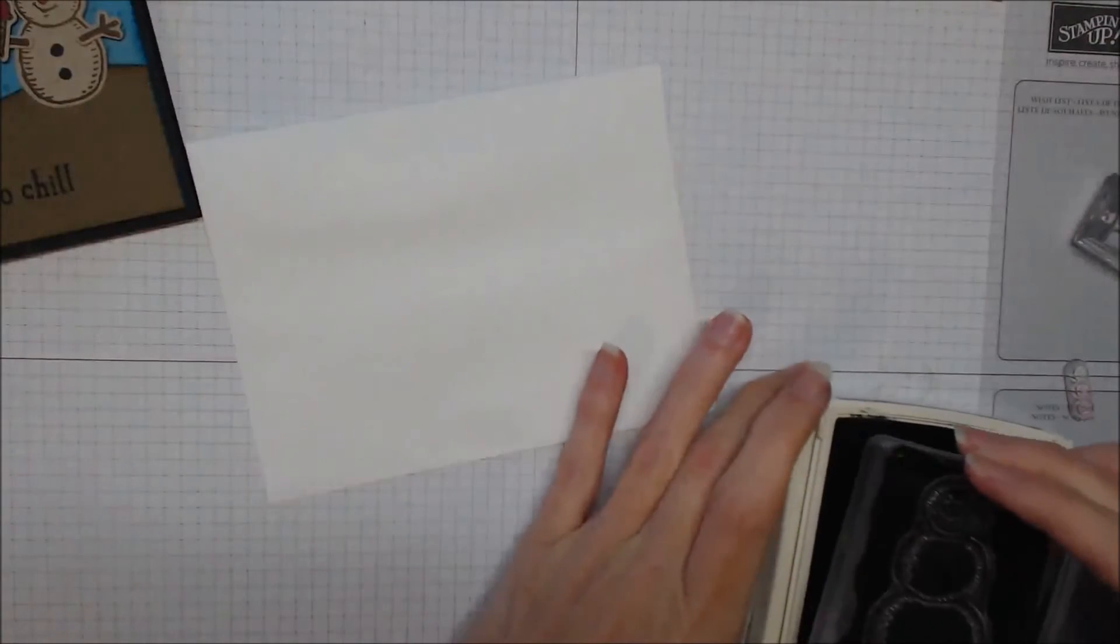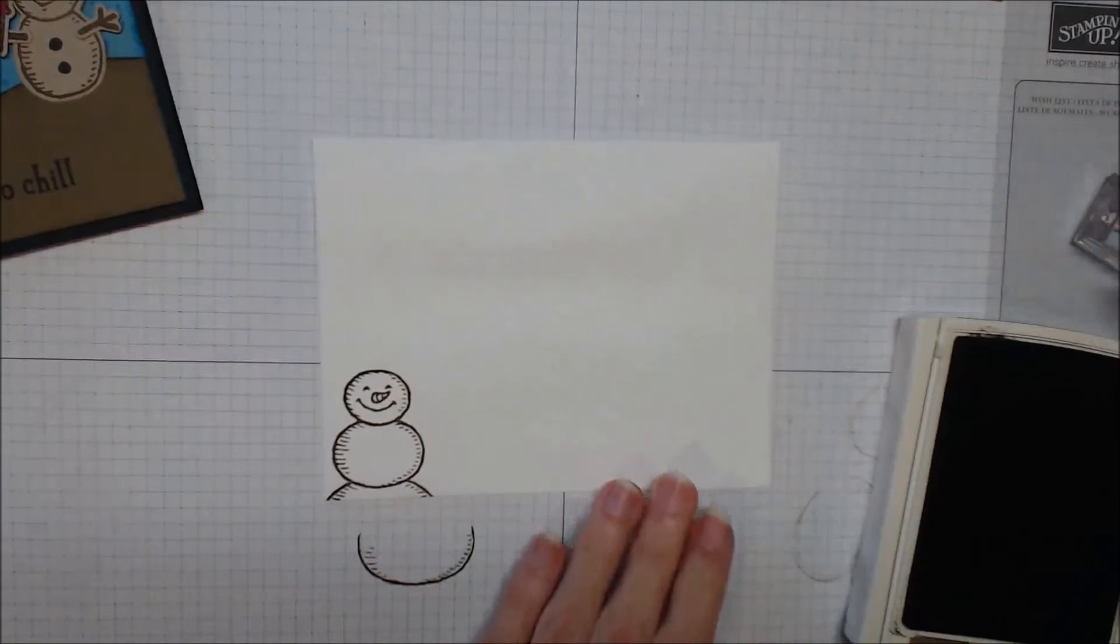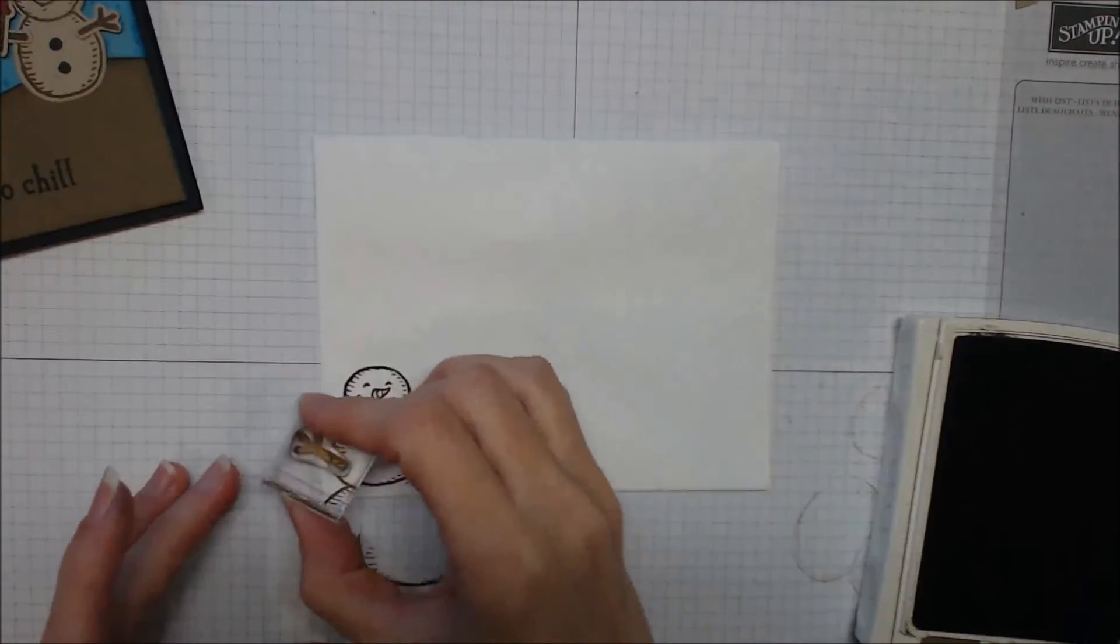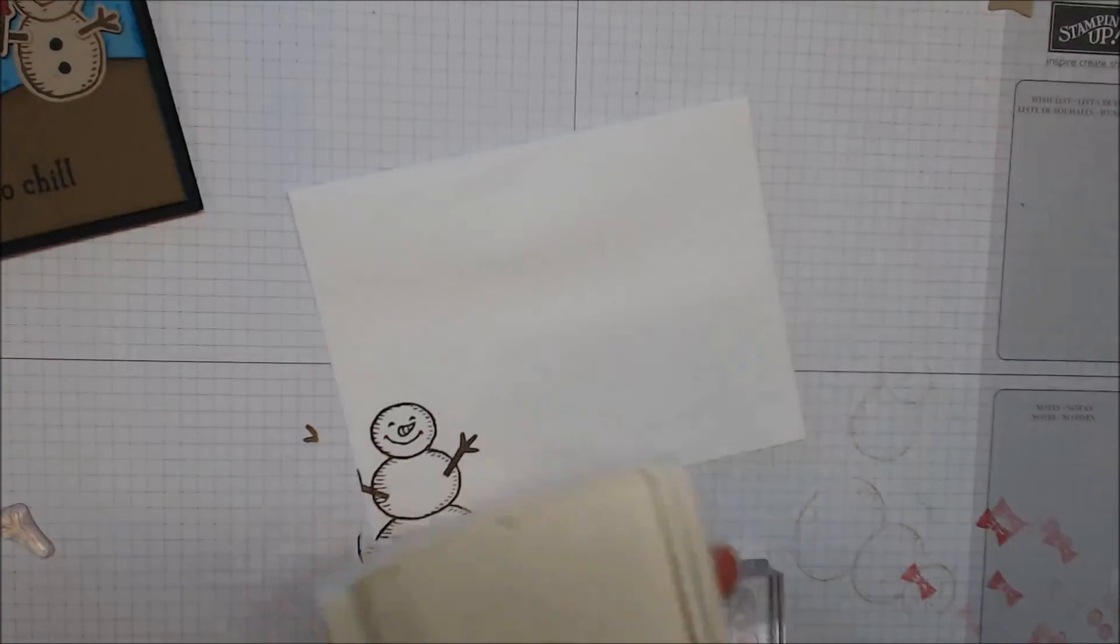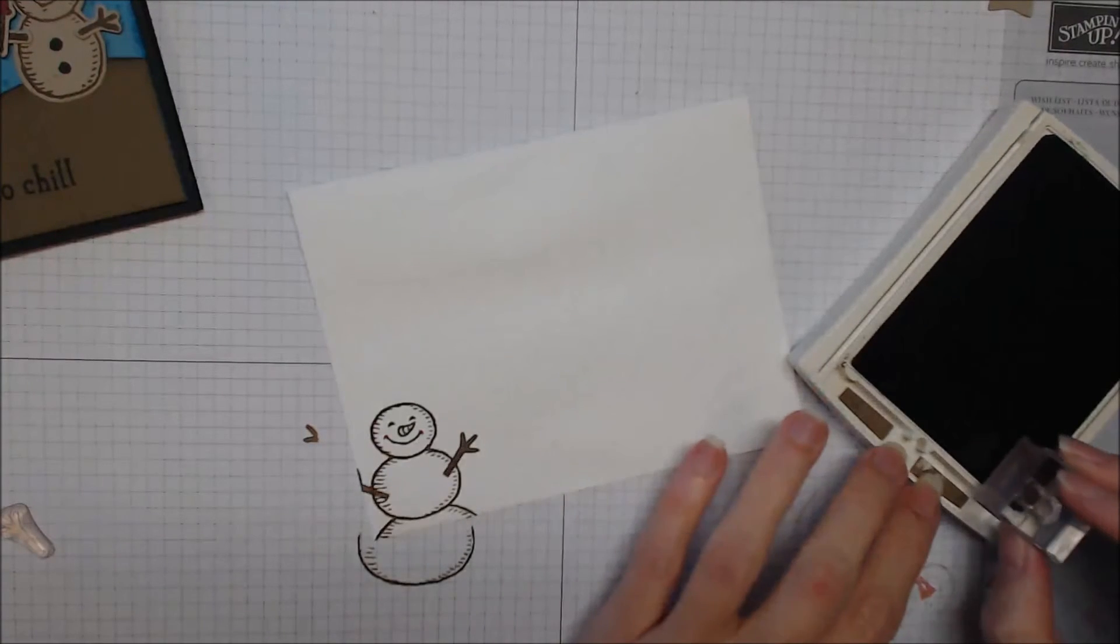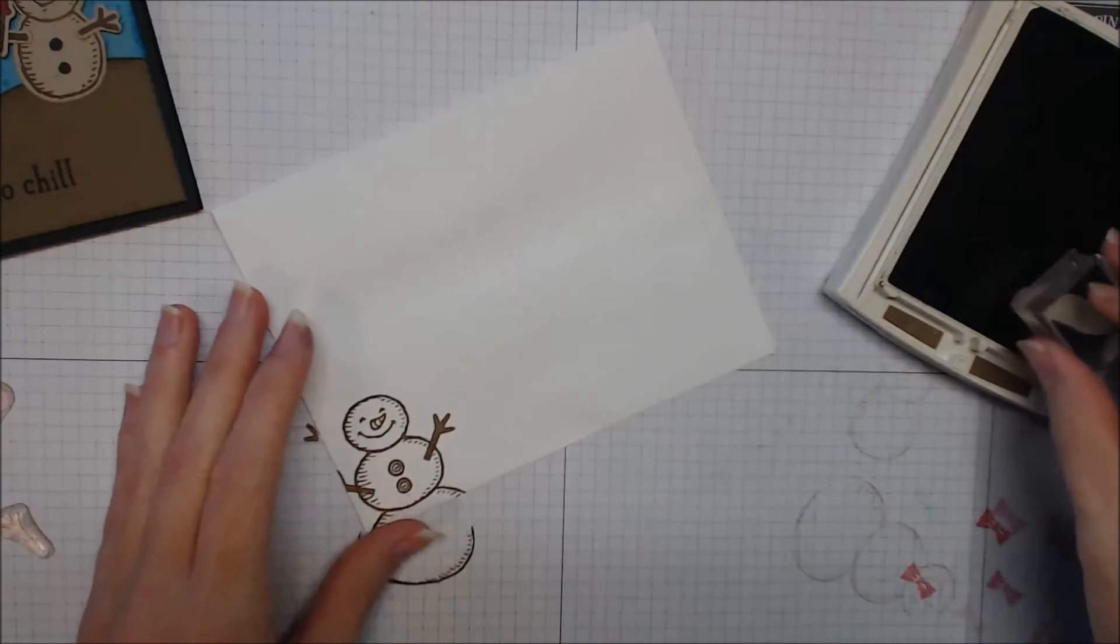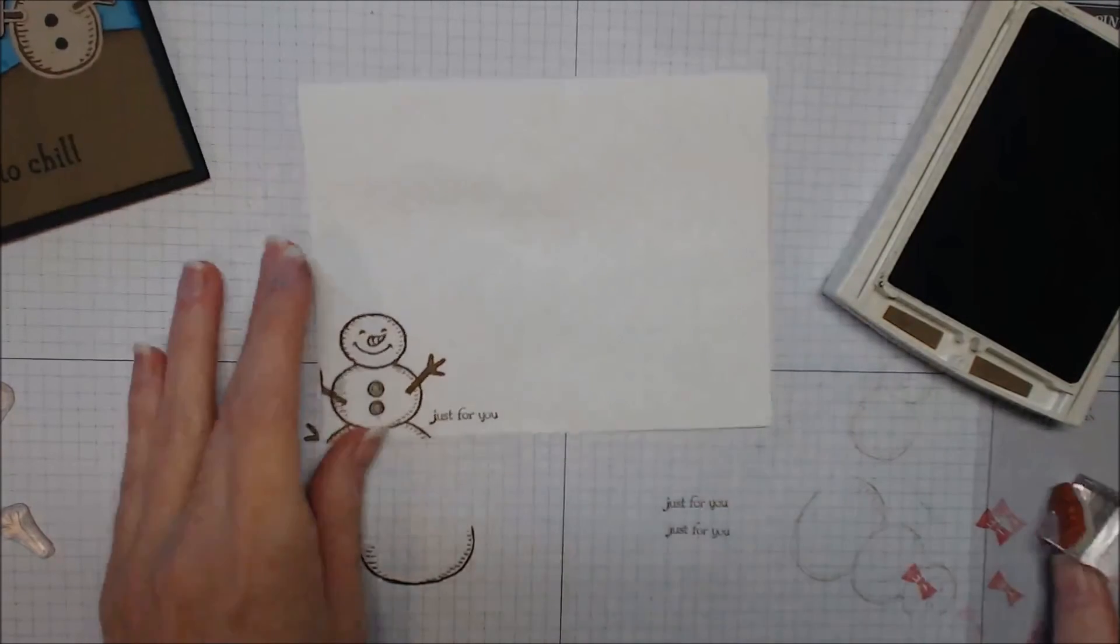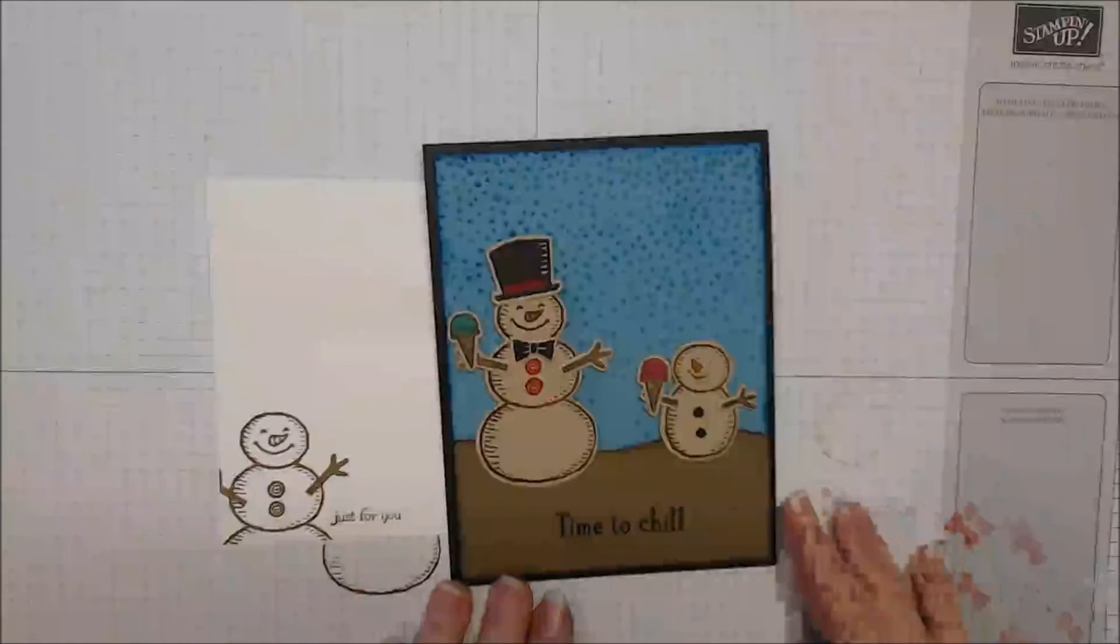Now that my card is complete I realized I forgot to stamp the envelope. So I'm going to take that large snowman and stamp him in the bottom left corner about two thirds of him with the soft suede. Add his little arms and then add a couple of the buttons with the soft suede ink as well. And then I'll stamp just for you from Teeny Tiny Wishes using soft suede ink down by the Mudman.